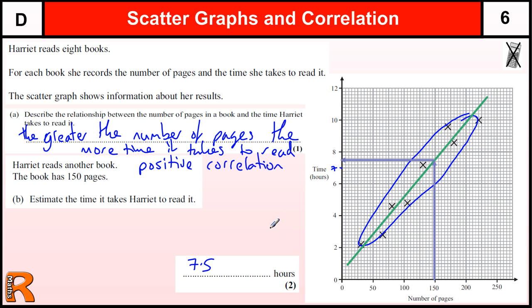Now, the range of values you're allowed here, if you have it somewhere between 7 and 8, you will get two marks. If you only have it between 6 and 9, you'd only get the one mark.